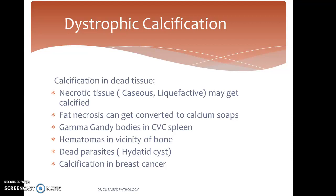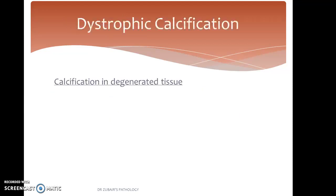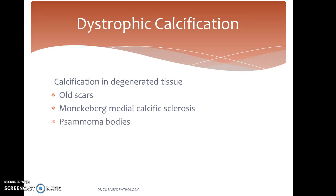Calcification in breast cancer is a very useful tip — on mammography, if there is irregular calcification, it is a soft pointer towards malignancy. Calcification also occurs in degenerated tissue such as old scars. Mönckeberg's medial calcific sclerosis occurs in the tunica media of blood vessels, especially in the myometrium in post-menopausal women. Psammoma bodies are seen in a variety of tumors, most importantly papillary carcinoma of the thyroid, meningiomas, and papillary serous carcinomas of the ovary and endometrium.